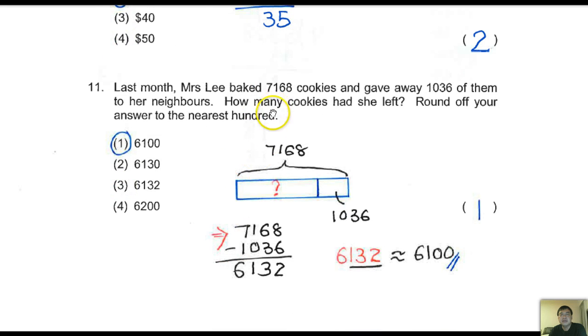Now, last month Mrs. Lee baked 7168 cookies and gave away 1036 of them to her neighbors. How many cookies had she left? Round off your answer to the nearest hundred. All right, take a look very carefully. This is the original number, 7168. This is the number given to their neighbors, and this is how much is left.